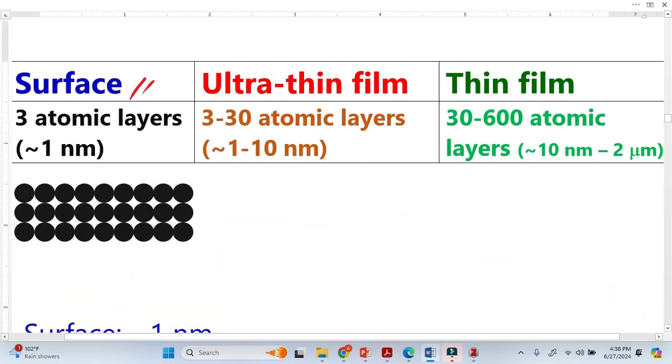What is surface? If we take three atomic layers of any element, that is basically called a surface. And the atom is very, very small.